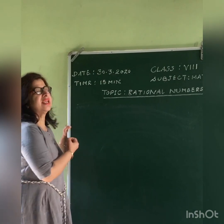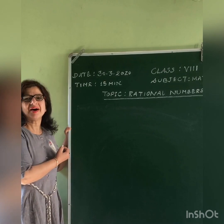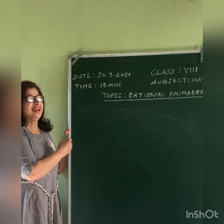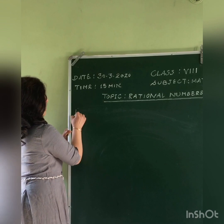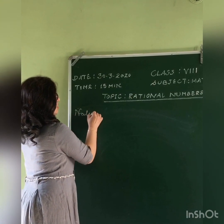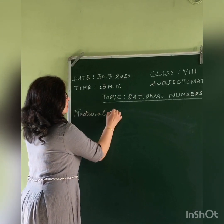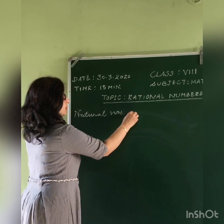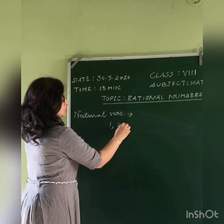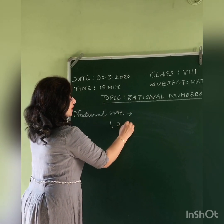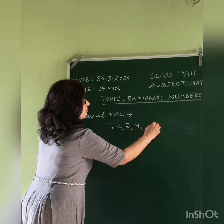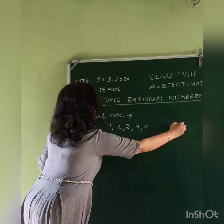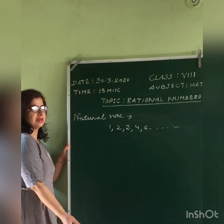To understand rational numbers, we first need to know about natural numbers. Natural numbers are counting numbers — for example, 1, 2, 3, 4, 5 up to infinity are called natural numbers.